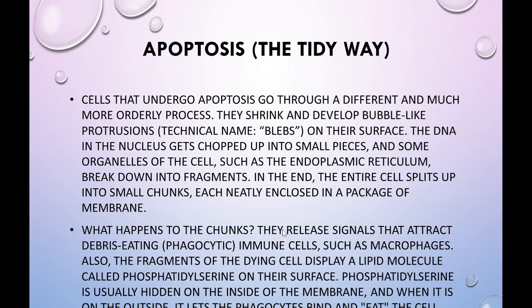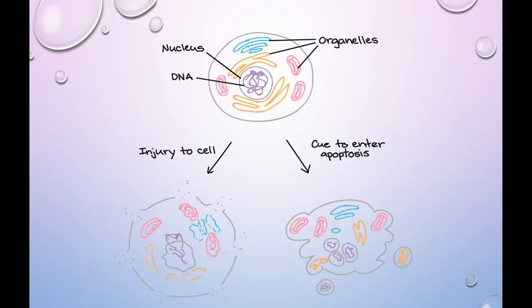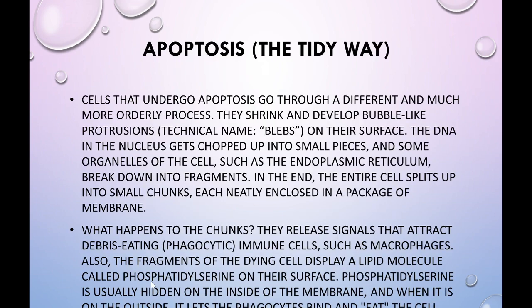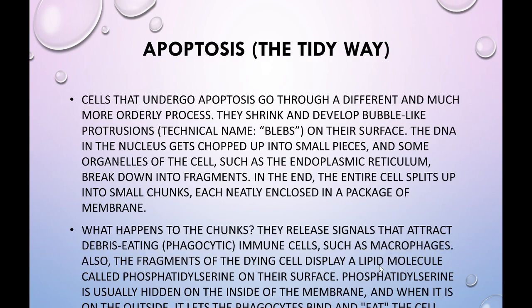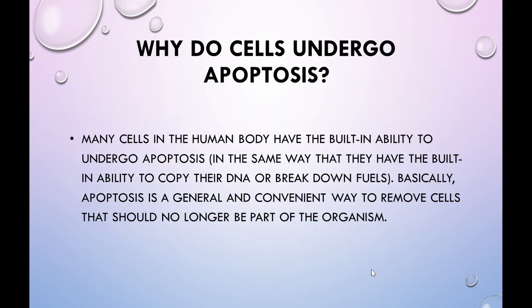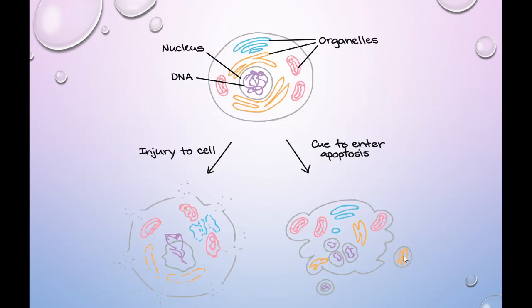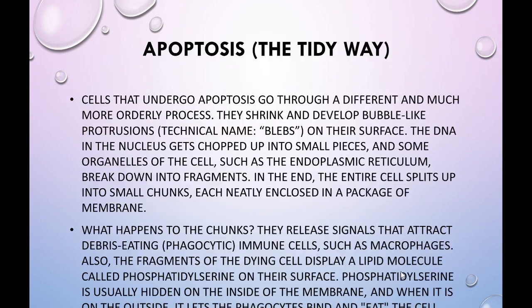These apoptotic body chunks are eaten by macrophages through phagocytosis. But how do macrophages know to eat these blebs or apoptotic bodies? There is phosphatidylserine, which is normally on the internal side of the cell membrane. But during apoptotic body formation, phosphatidylserine moves to the outer membrane surface, acting as a receptor that attracts macrophages, which then detect and engulf the apoptotic bodies.